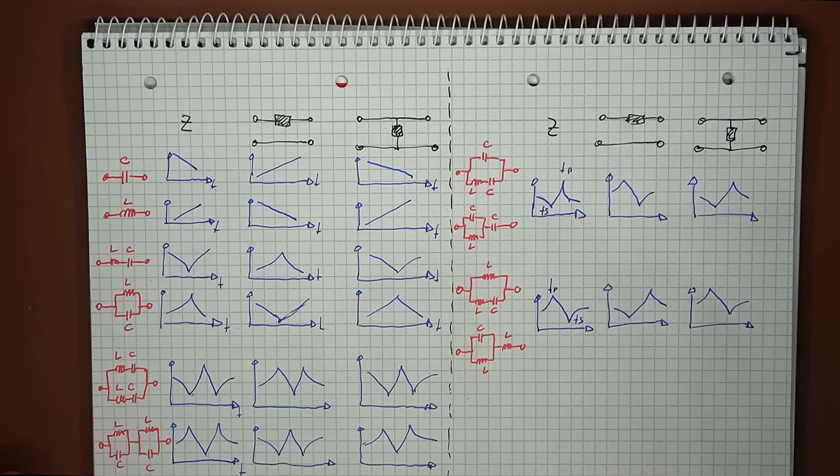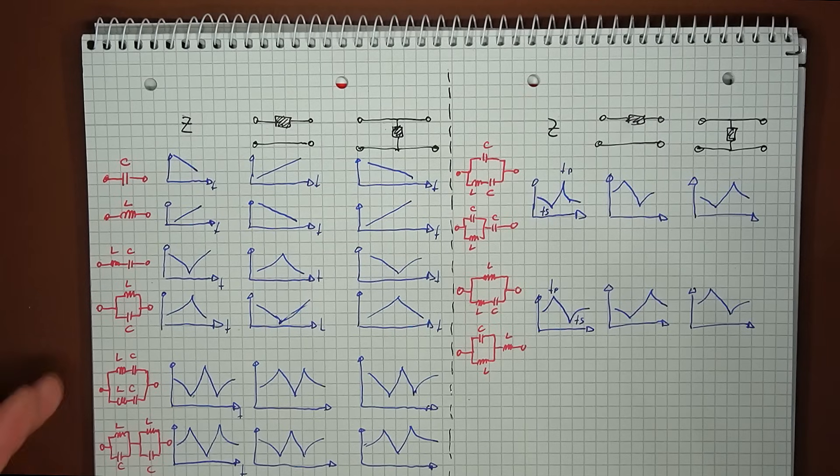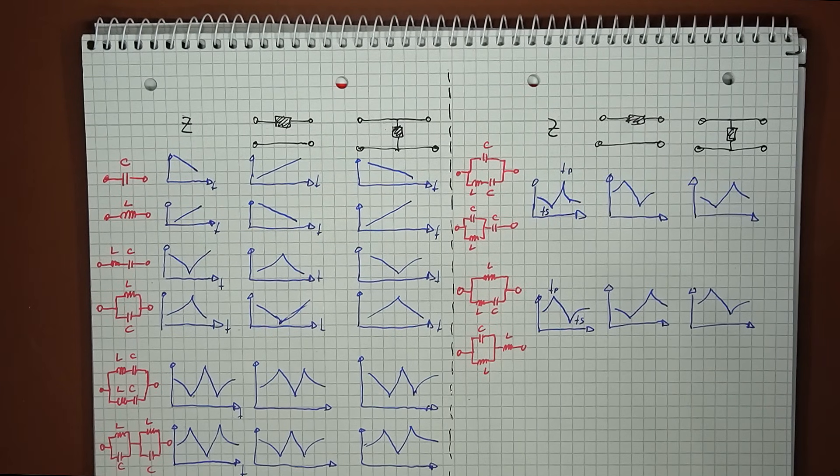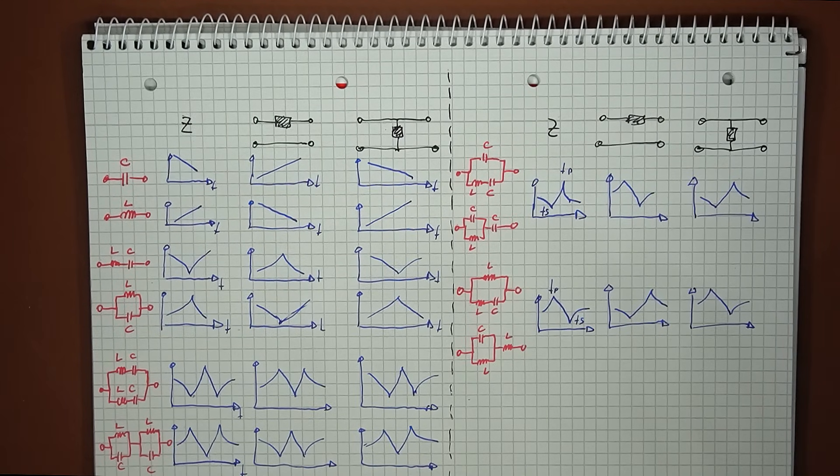Finally, adding more and more reactive elements increases the number of resonance points. The last set to look at is a couple of four-component circuits, basically groups of two series or two parallel circuits. Here, we get two series and one parallel resonance for the first circuit, and two parallel and one series resonances for the second set. More and more components can of course be added when needed, and this will increase the number of resonance points, and will make the response shape a bit more complicated.